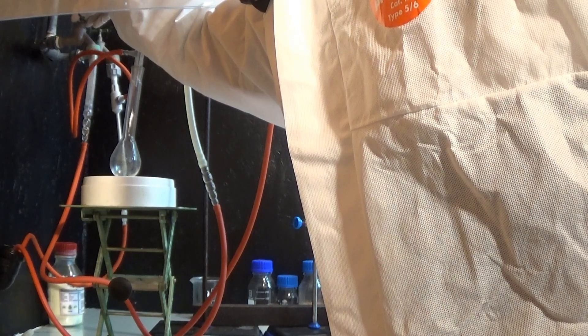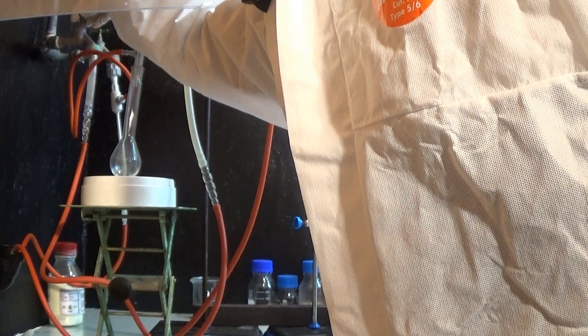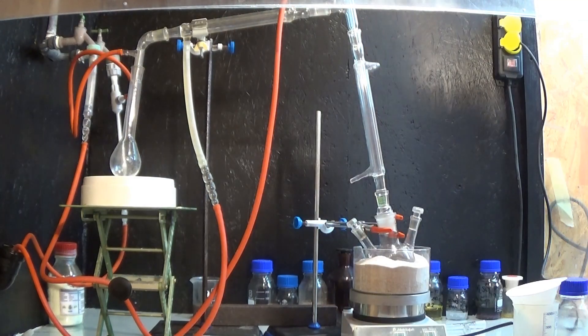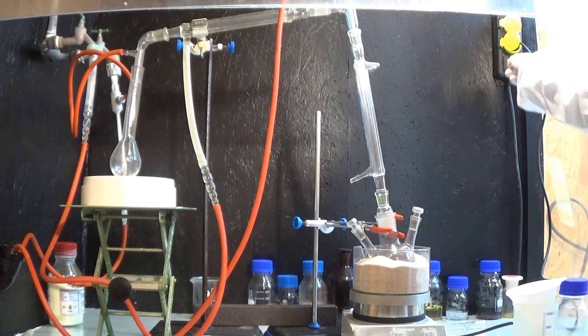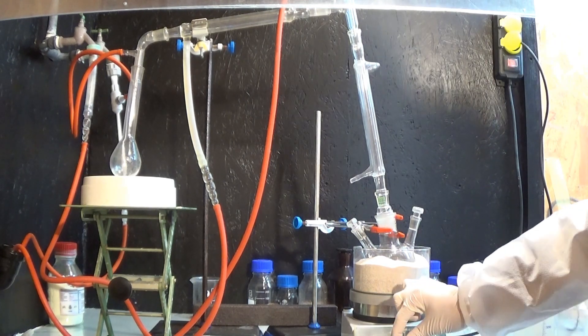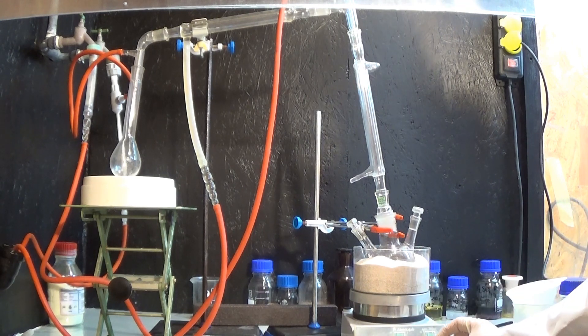The reason why we have to do a fractional vacuum distillation is the reactivity of the carbon-carbon double bond in the styrene. As styrene can polymerize on its own, we have to reduce the temperature during the distillation as much as we can to reduce the speed of the self polymerization.